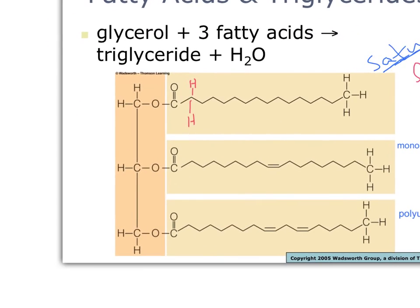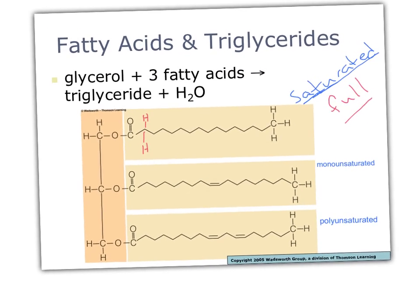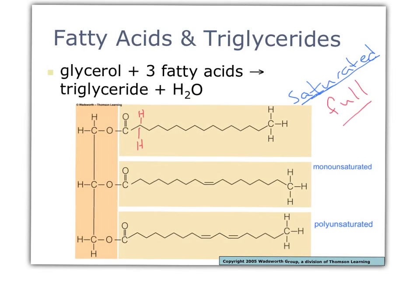So we have saturated, monounsaturated, and polyunsaturated fatty acids. When looking at diet, we would love to have fatty acids that come from the polyunsaturated area. Olive oil would have polyunsaturated fats, and any plant is going to have mono or polyunsaturated fats. Animals, on the other hand — like beef steaks and pork — are going to have saturated fatty acids.